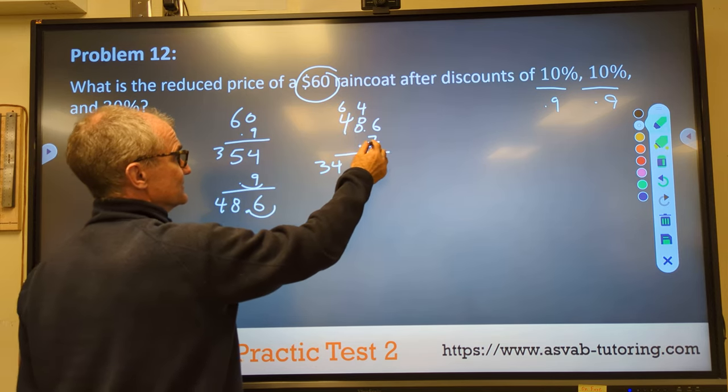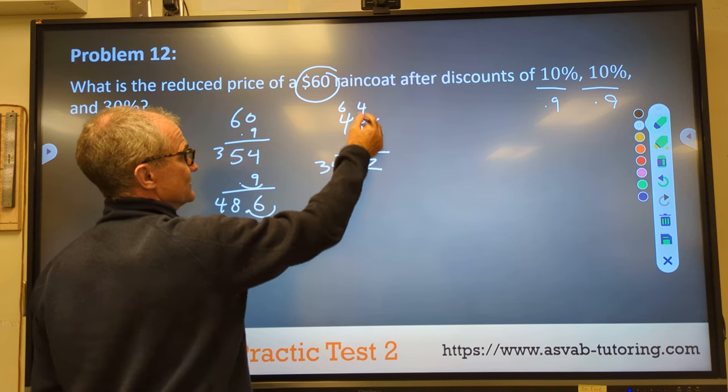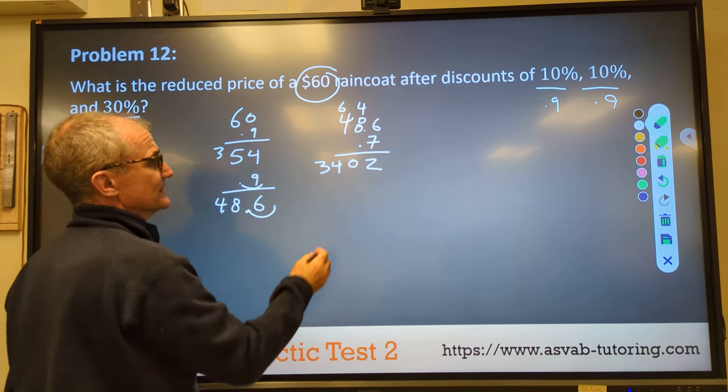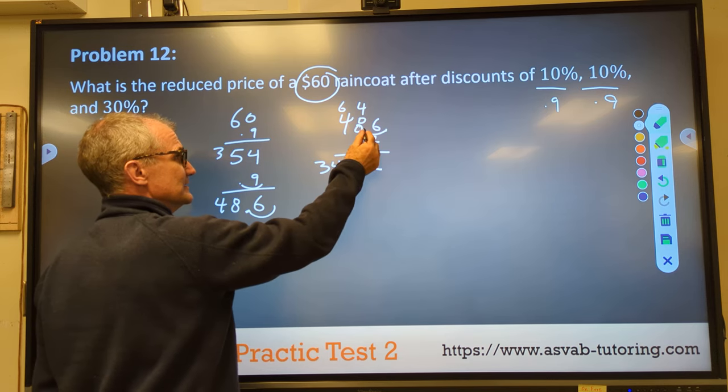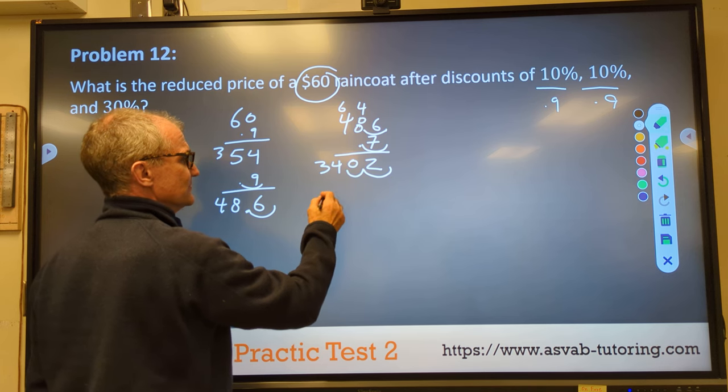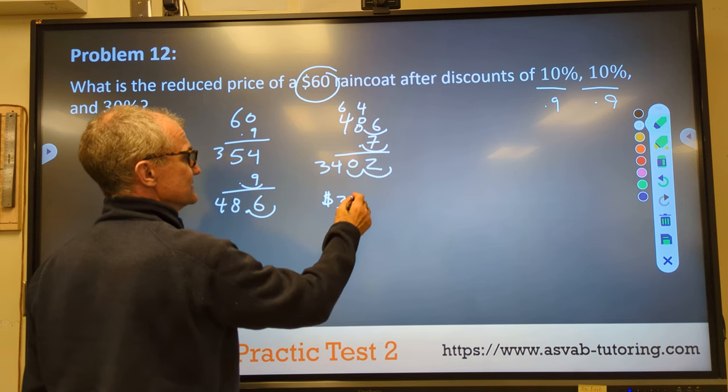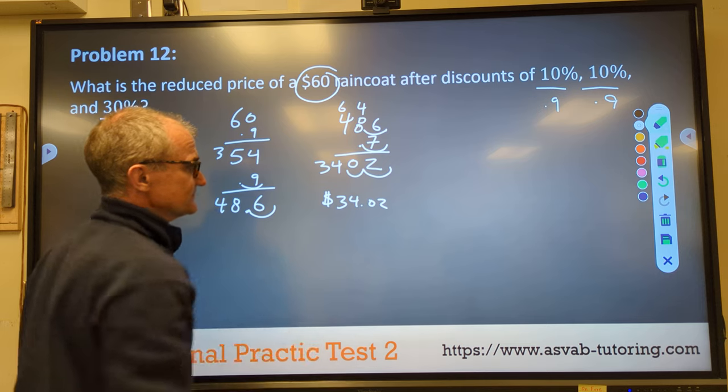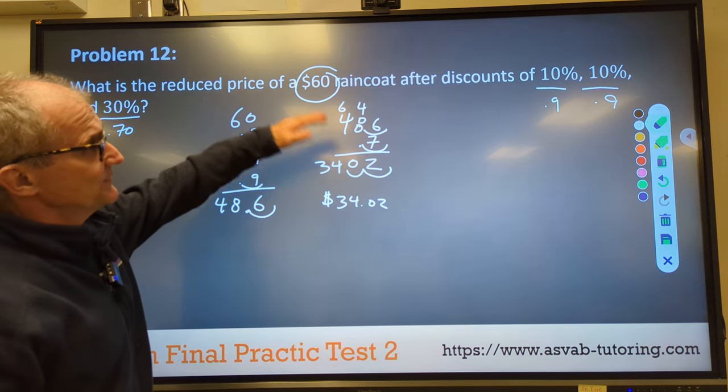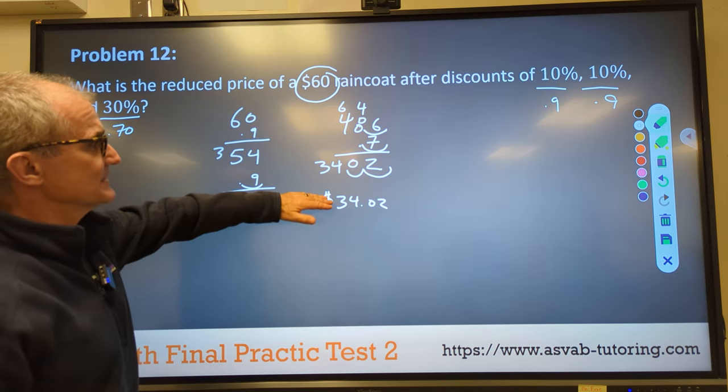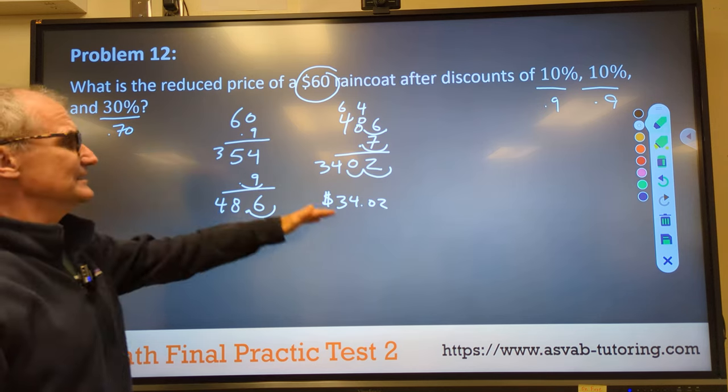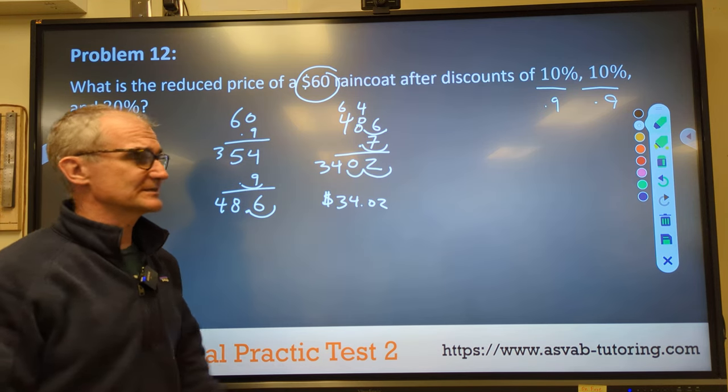Pen's giving me trouble here. 42, carry the 4, 56, 60. Decimal place is over 1, 2. So I go over 1, 2, and I get $34.02. Let's see if that's a reasonable answer. If it was 50% off the whole thing, it would be $30, but it's not. So once I subtract 10 and then 10 and then 30, I end at $34.02.